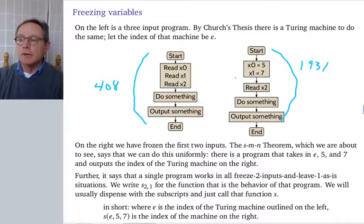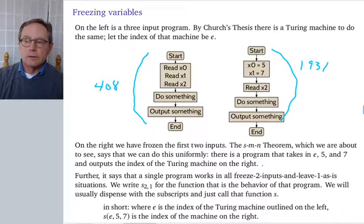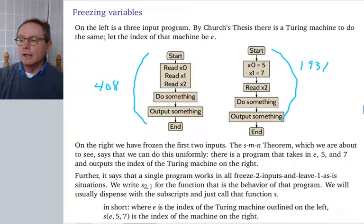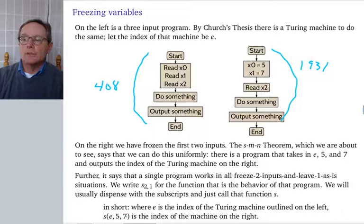That's the content of the SMN theorem. There is a program that takes e, 5, and 7 — or 408, 5, and 7 — and outputs the index of the Turing machine on the right, 1931. Furthermore, a single such program works for all freeze-some-and-leave-others situations. We call that single program s₂₁. In short, where e is the index of the Turing machine on the left, s(e, 5, 7) is the index of the machine on the right.